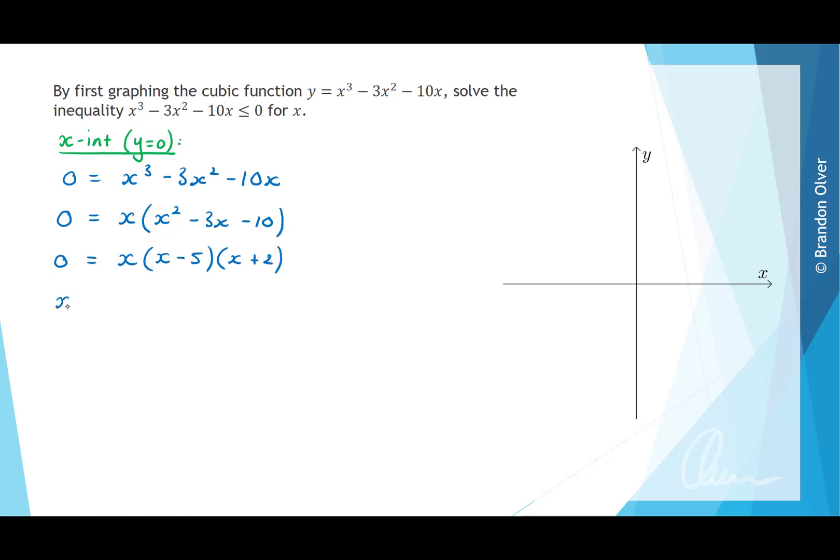So the null factor law states that x could equal 0, x minus 5 could equal 0, or x plus 2 could equal 0. Adding 5 to both sides of this equation, we find that x is equal to 5, and subtracting 2 from both sides of this equation gives x is equal to negative 2.